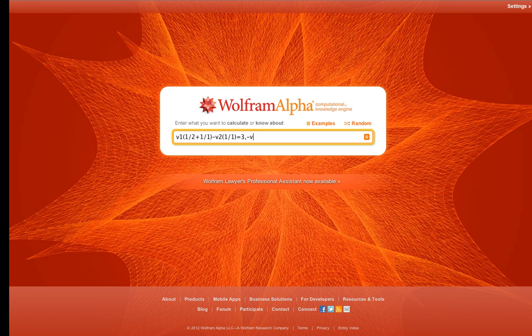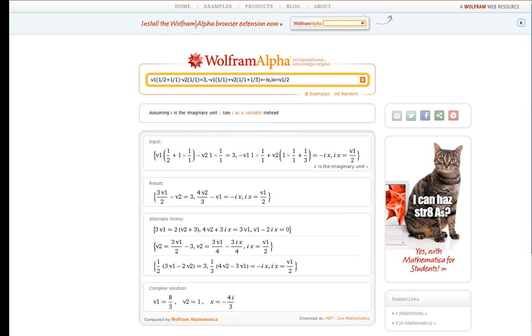The second equation is minus V1 times 1 over 1 ohm plus V2 times 1 over 1 ohm plus 1 over 3 ohms. And this then is going to be equal to minus IX. And then we have IX is equal to V1 divided by 2 ohms. And we tell it to do computation. And oh dear.